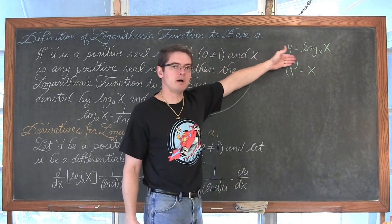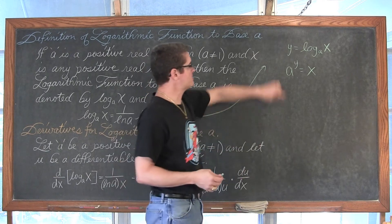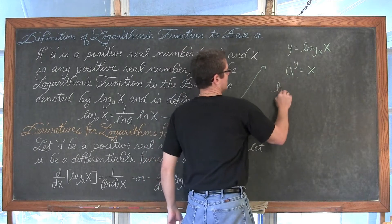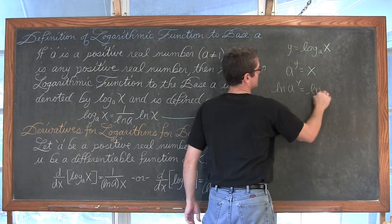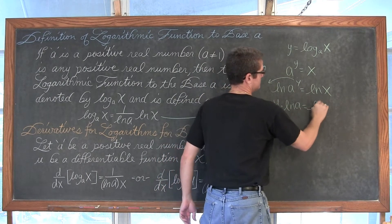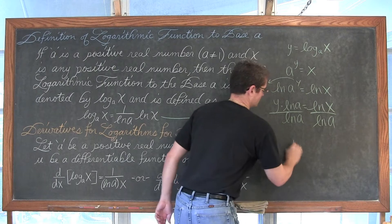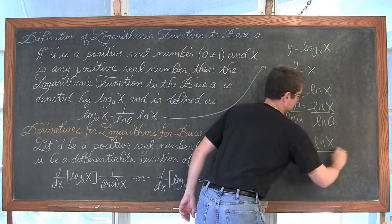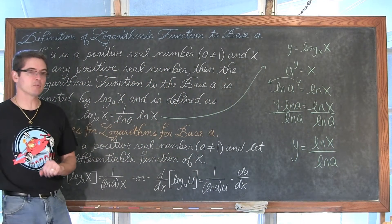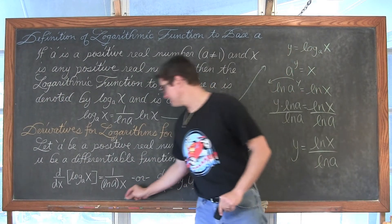Now if I want to solve this equation for y, you need logarithms to solve for equations when the variable is in the exponent. I want to get into the natural log function, so I am going to take the natural log of both sides: natural log of a to the y equals natural log of x. Bring this power down out front, then divide both sides by natural log of a. And voila! We have our definition of a logarithmic function to base a — it is simply changing the base from base a to natural log.